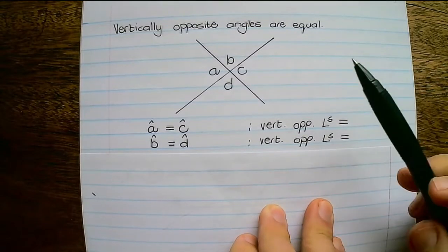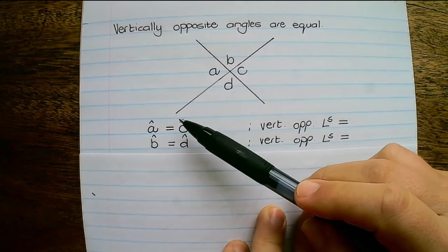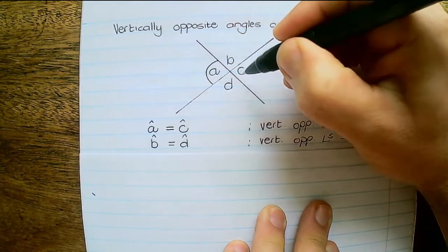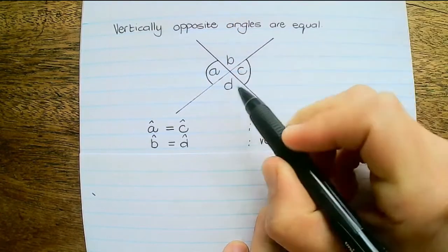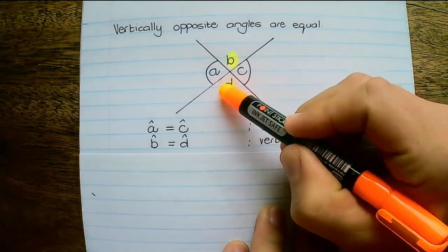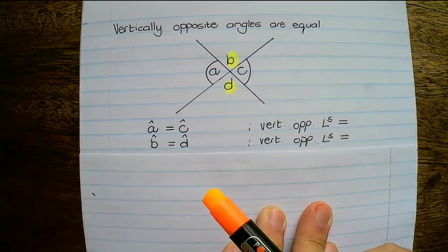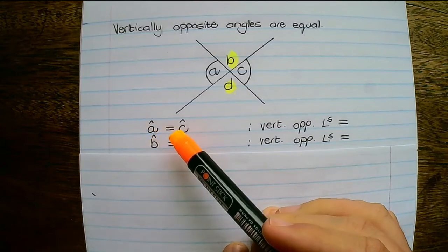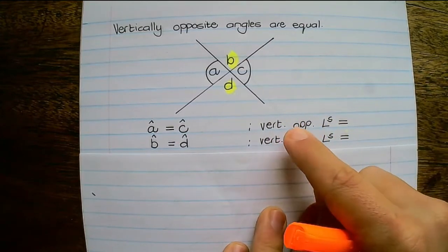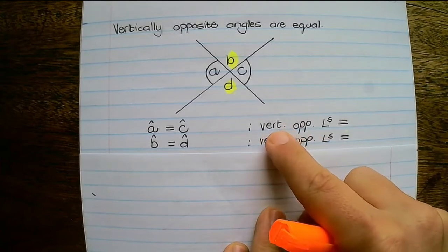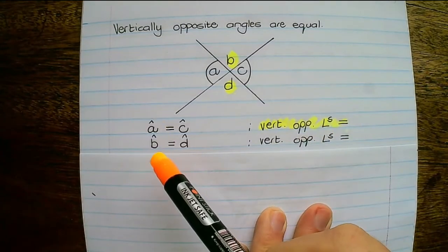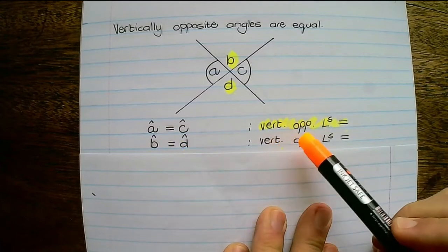Next up, vertically opposite angles are equal. In this example we do not have parallel lines. When we speak about vertically opposite, we're talking about angle A and angle C — they are equal in size — and angle B and angle D, which are also equal in size. So angle A equals angle C: vertically opposite angles equal, written as 'VERT OPP angles equal'. And angle B equals angle D — vert opposite angles equal.